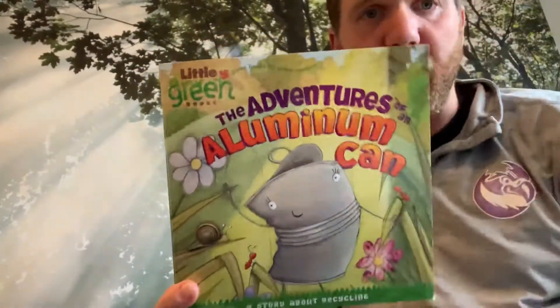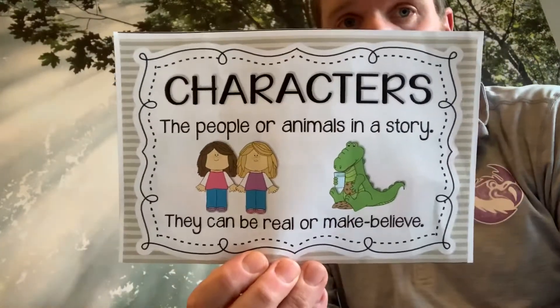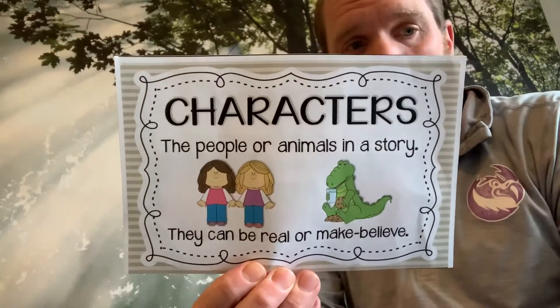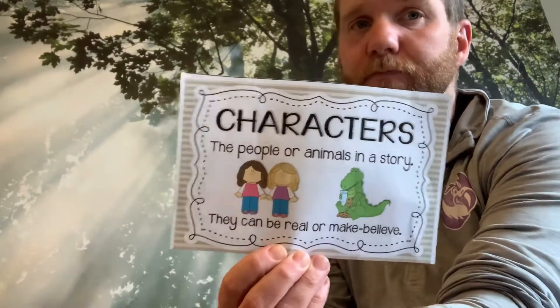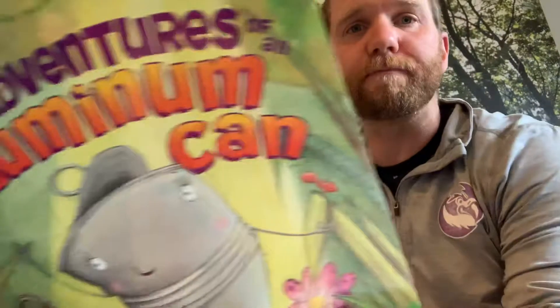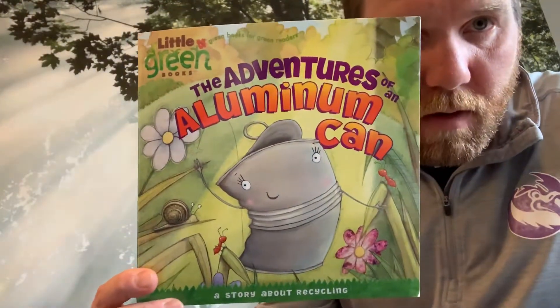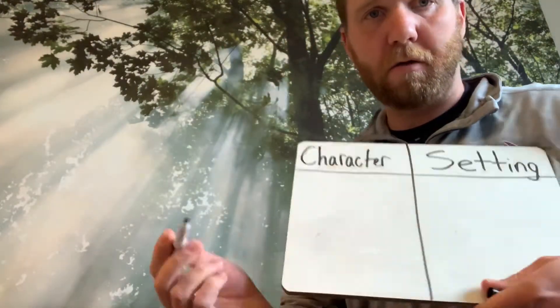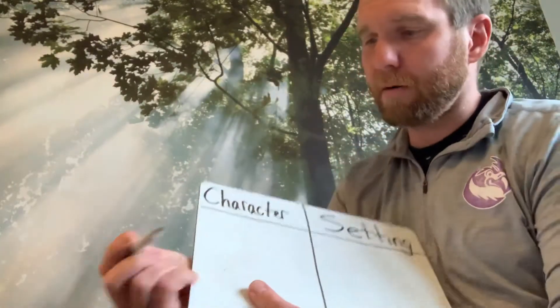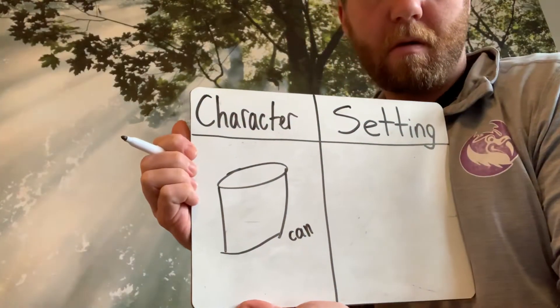That was the adventures of our aluminum can. Now, in this story, there were characters. There was one main character. A character is a person or an animal that's usually in the story. Now, in this story, our character was a little different. Who do you think the main character of this story was? Who was telling the story? The aluminum can was our main character. So, here on my beautiful chart, I'm going to draw, underneath character, our aluminum can. I'll write his whole name: aluminum can.